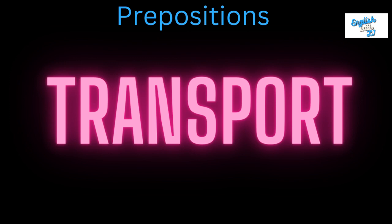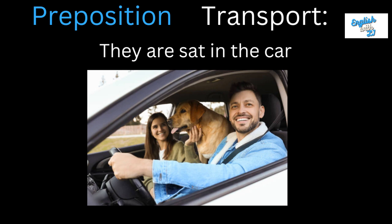Prepositions in relation to transport work slightly differently. They are sat in the car — they are in the location of the car. If we said 'on the car,' that would mean sitting on top of the roof or bonnet. If we said 'at the car,' that would mean standing outside next to the car. But since they are inside, we say they are in the car.